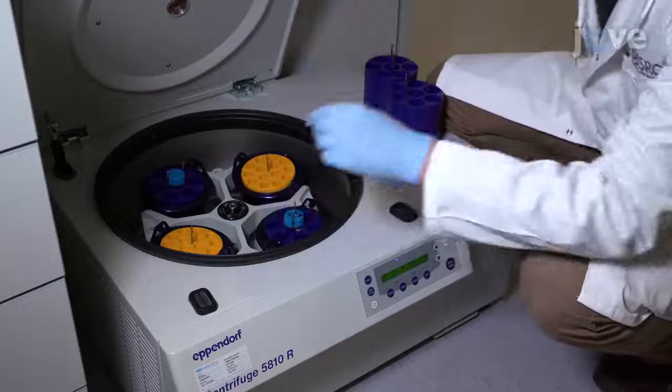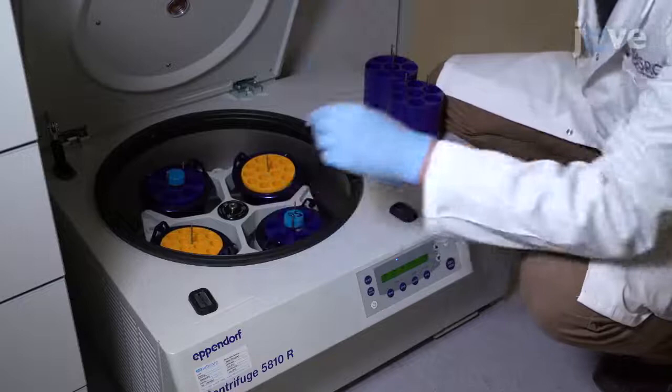Next, centrifuge the suspension cells at 760 times G and 4 degrees Celsius for 5 minutes. Remove the supernatant and resuspend the cell pellet.